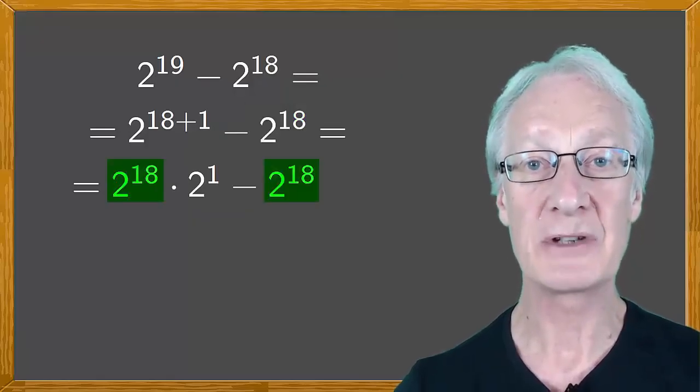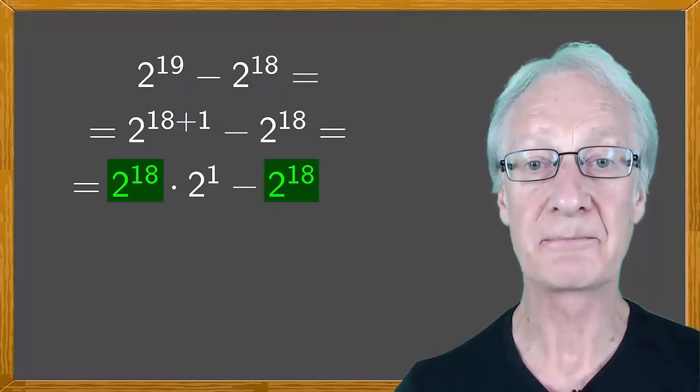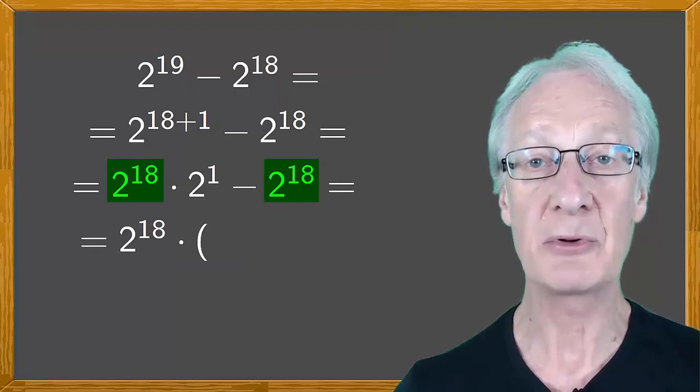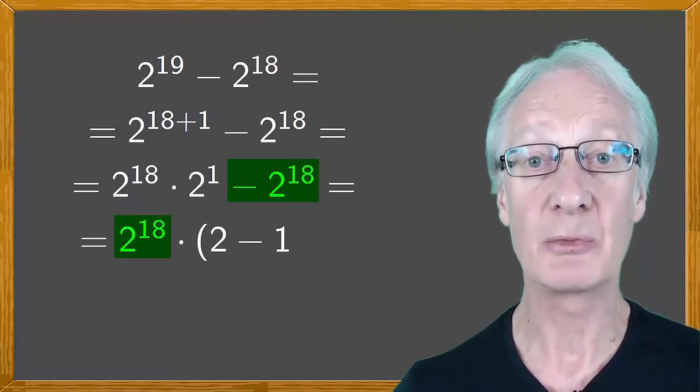Notice that we can now take out the common factor of 2 to the 18. So, we get 2 to the 18 times, in parentheses, 2 to the 1, which is 2, minus 1.